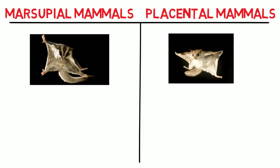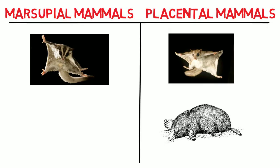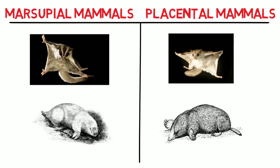Another case is the placental mole versus the marsupial mole. Both are burrowers with similar traits that evolved independently from a similar ancestor.